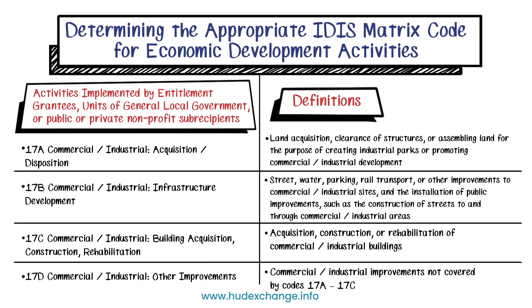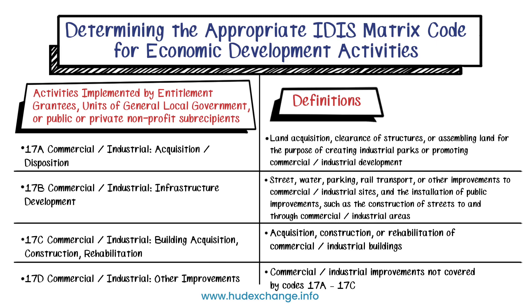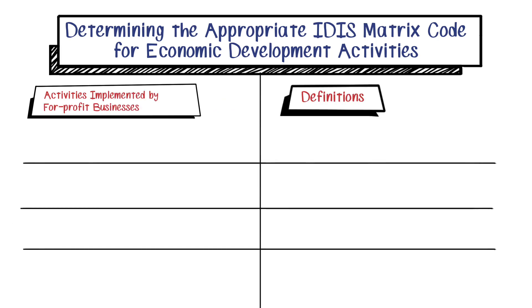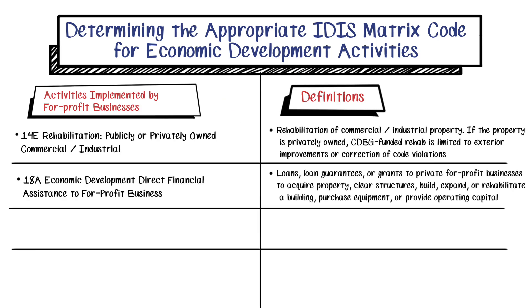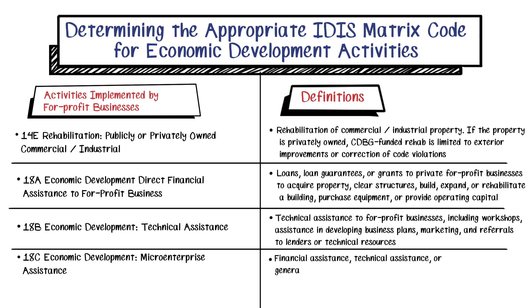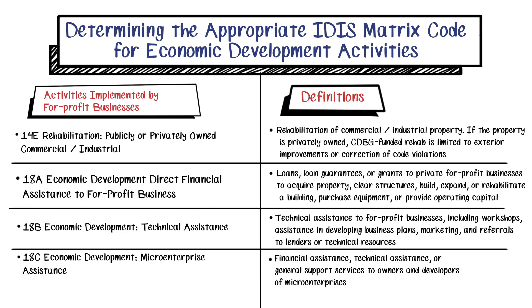For an example, an activity to rehabilitate a commercial or industrial building, such as a restaurant or factory, that is implemented by an entitlement grantee would use IDIS Matrix Code 17C. An activity implemented by a for-profit business that only involves rehabilitation of the exterior of their commercial building, such as a grocery store, would use IDIS Matrix Code 14E. However, if financial assistance is provided to a for-profit business to rehabilitate the interior of their commercial building, such as a retail store, IDIS Matrix Code 18A should be used.